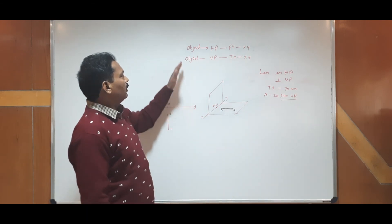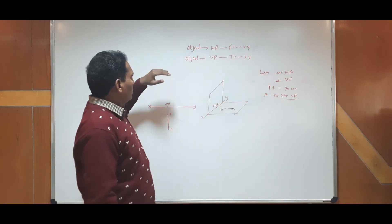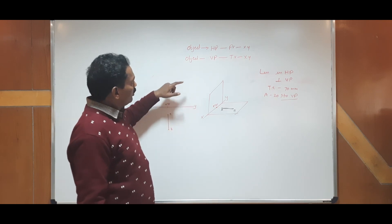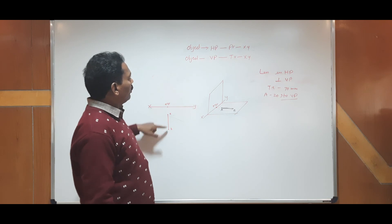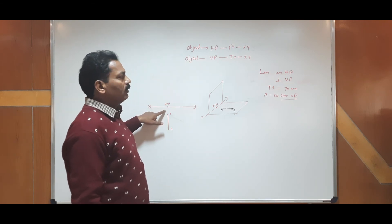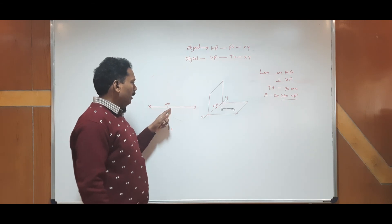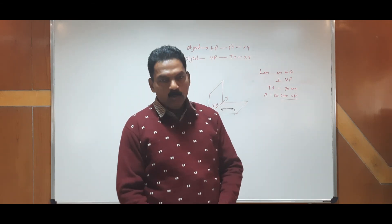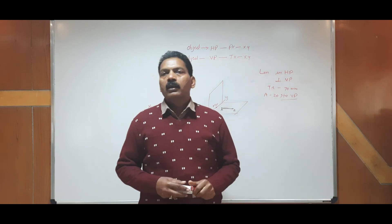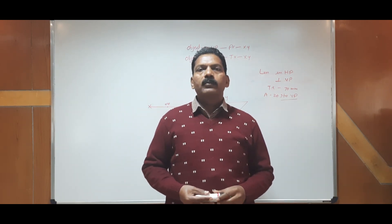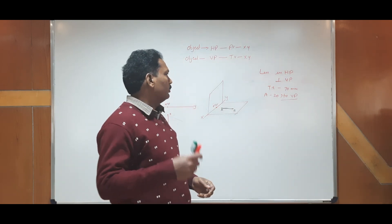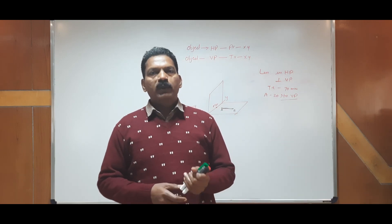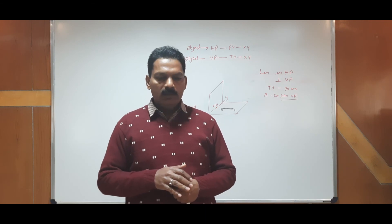We can verify the formula is also satisfied. The line is perpendicular to VP, so the top view is perpendicular. The line is in HP, so the front view is on the XY line. And the front view is parallel to XY, so the top view is the true length. In the next video, we will talk about when the line is parallel to HP and at different positions with the vertical plane. Thank you.